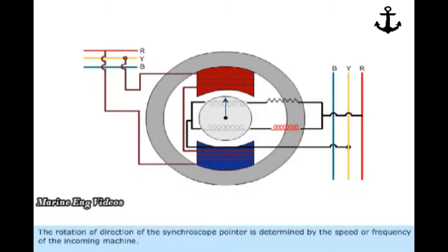The rotation direction of the synchroscope pointer is determined by the speed or frequency of the incoming machine. If the pointer rotates in anticlockwise direction, it means that the frequency of the incoming machine is less.